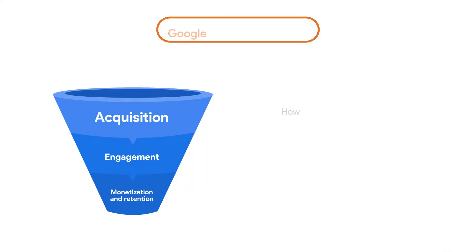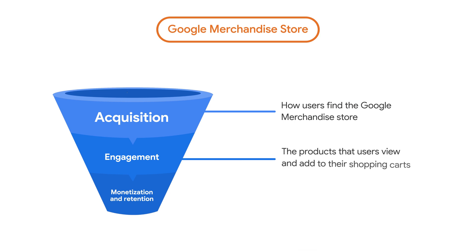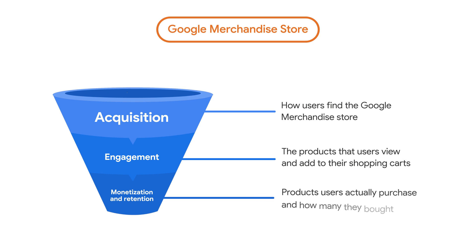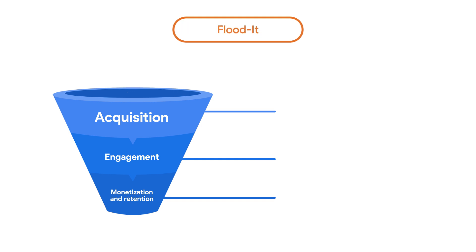You can see how users find the Google Merchandise Store, the products users view and add to their shopping carts, which products users actually purchase, and how many they bought. Another example is a mobile gaming app called Flood It.